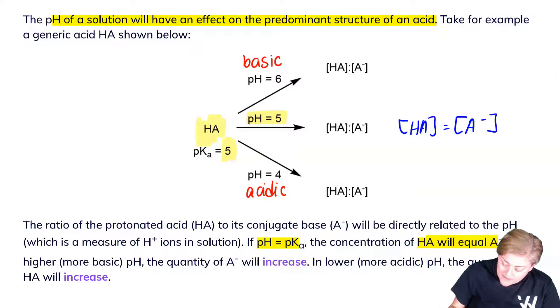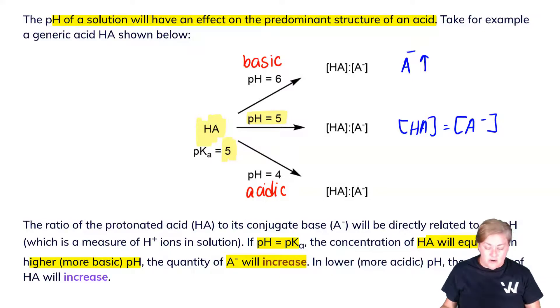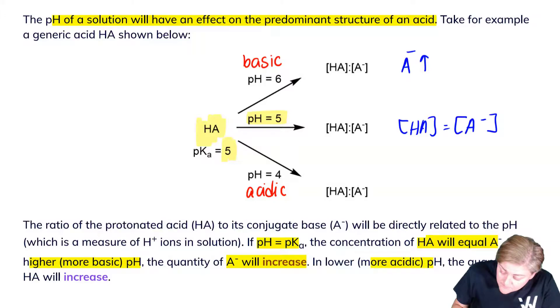When I have higher, more basic conditions, the quantity of A- will increase. And so what I'm going to get is increased A- here. And when I have lower, more acidic pH, the quantity of HA will increase.